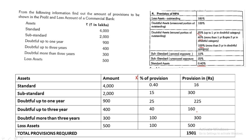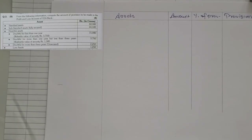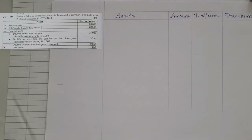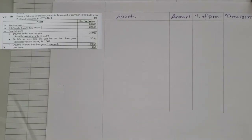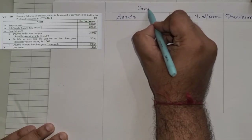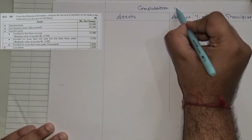So this is how you solve the sum when all asset values are given — the previous one was format-based with DICGC, and this one is based on the table. This entire topic consists of these two types of sums, which are very exam-oriented. Now question number 3b: from the following information, compute the amount of provision to be made in the P&L account of ER Bank. Standard assets, substandard, and doubtful with realizable values are given.